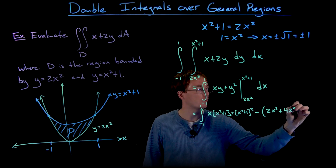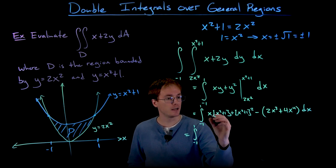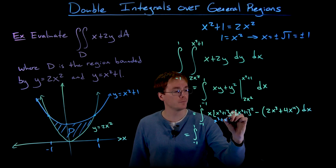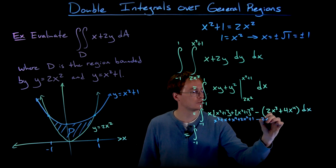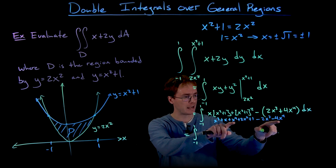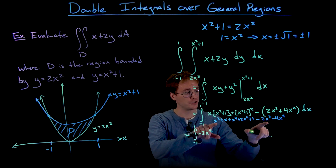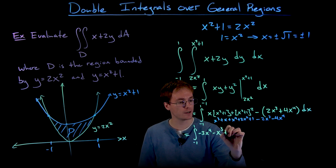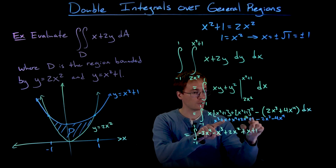Plugging in the upper limit gives x(x squared plus 1) plus (x squared plus 1) squared, and plugging in the lower limit gives 2x cubed plus 4x to the fourth. Expanding and combining like terms, we get negative 3x to the fourth minus x cubed plus 2x squared plus x plus 1.